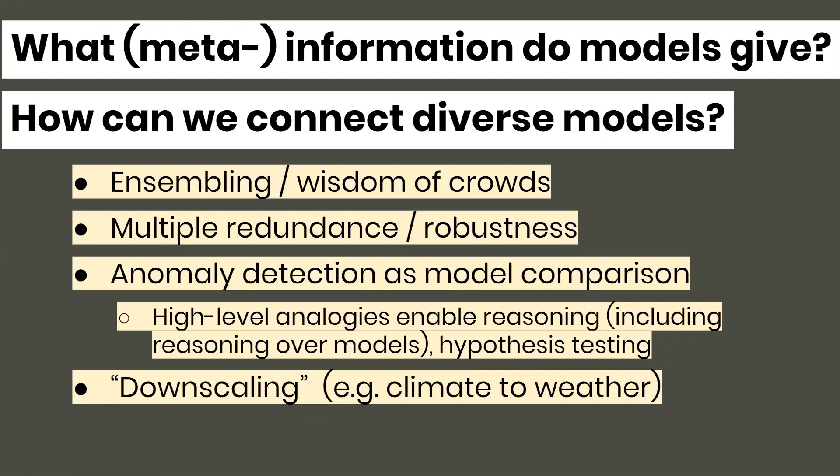Another field that would benefit from this kind of analysis is downscaling, which I think originated in the climate informatics community. It's basically relating a model at one scale to a model at another scale — the canonical example is relating climate models to weather models. We have very good climate models at the scale of hundreds of years, and very good weather models for the next few days. But there's a period in between — the scale of months — that we're terrible at predicting from either perspective. It seems like there should be a more principled way to combine predictions from different models.